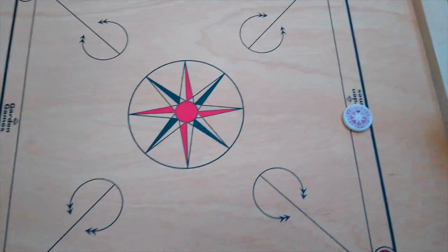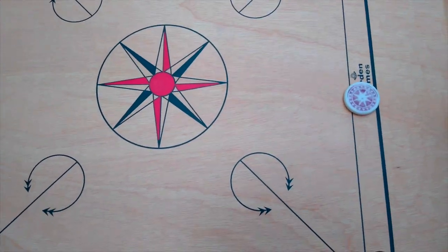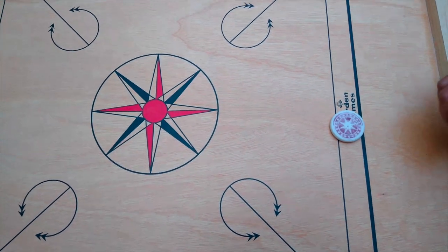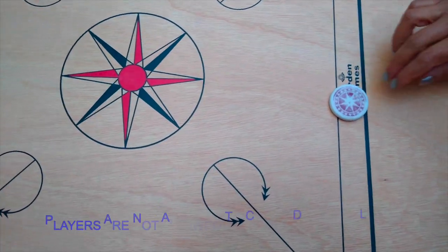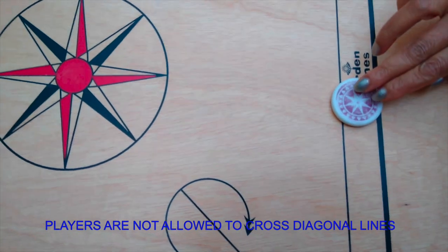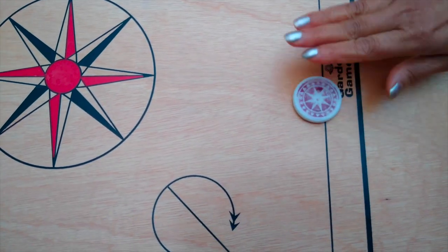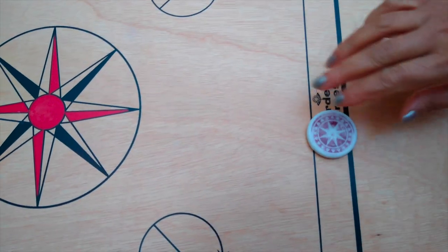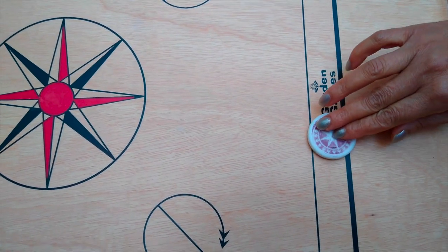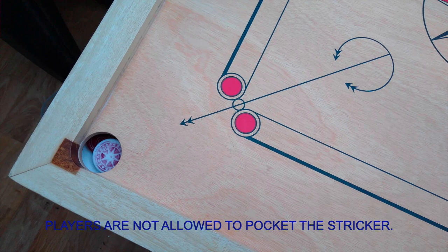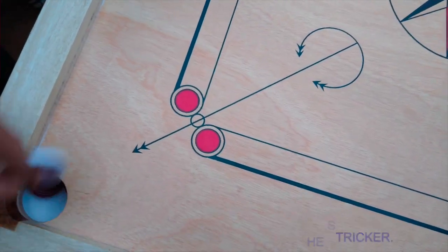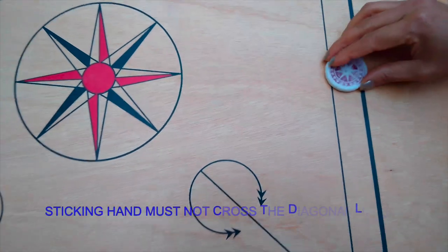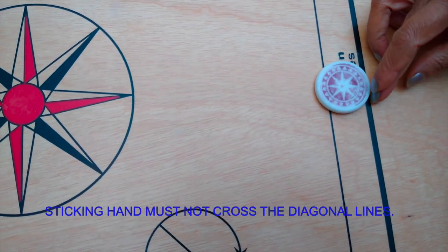If the player commits one of these faults, they will get a penalty. Let's see what the faults are. Number one: players are not allowed to cross diagonal lines. Number two: players are not allowed to pocket the striker. Number three: the striking hand must not cross the diagonal lines.